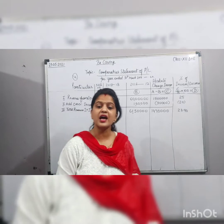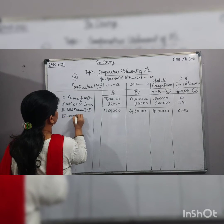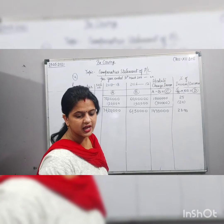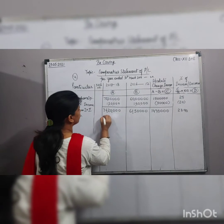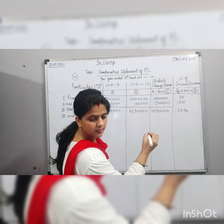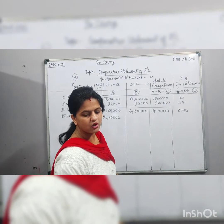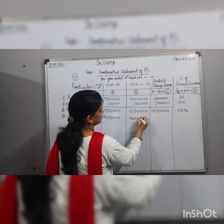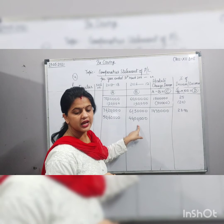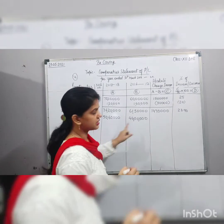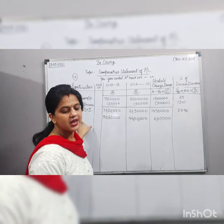Fourth point is Less Expenses. Expenses for the current year (A) are ₹50,60,000 and for the previous year (B) are ₹44,00,000. The absolute change (C = A − B) is ₹6,60,000. The percentage is 6,60,000 upon 44,00,000 into 100 = 15%.